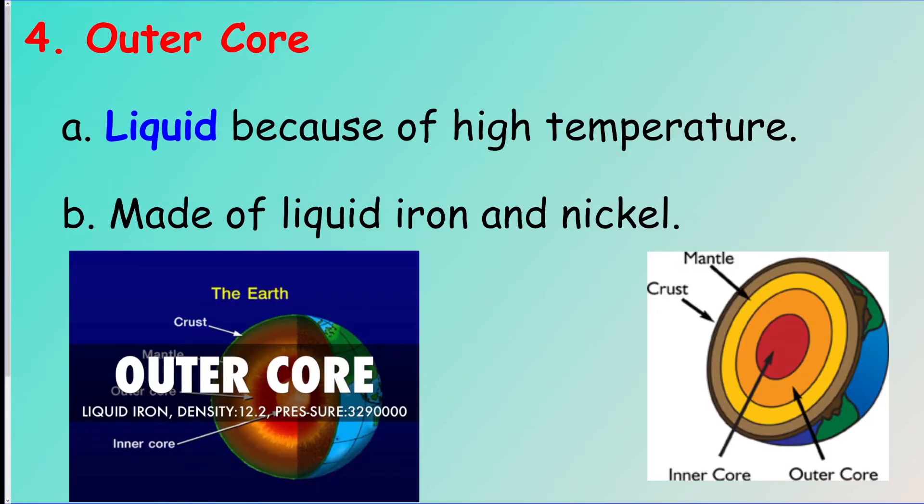Then we got the outer core, which is underneath the mantle. This is liquid because it's so hot as you go down into the earth, and it's mostly made of iron and nickel, which are two metals. These iron and nickel, this iron nickel liquid is actually rotating, and it creates the earth's magnetic field.